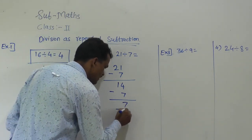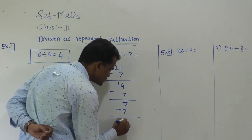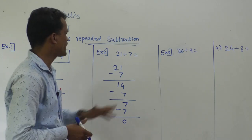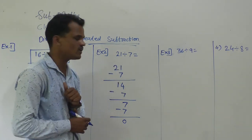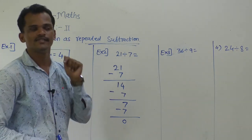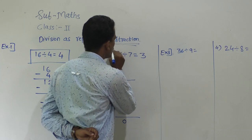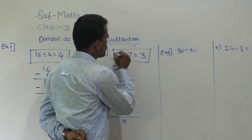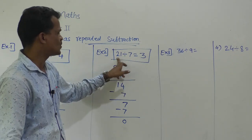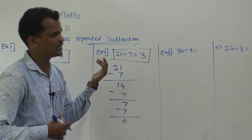Then again subtract 7: 7 minus 7 is 0. How many times did we subtract 7 from 21? Count: 1, 2, 3 — we subtracted 3 times. So 3 is the quotient. You can cross-check your answer: 7 threes are 21, or 3 sevens are 21 — so it is correct.